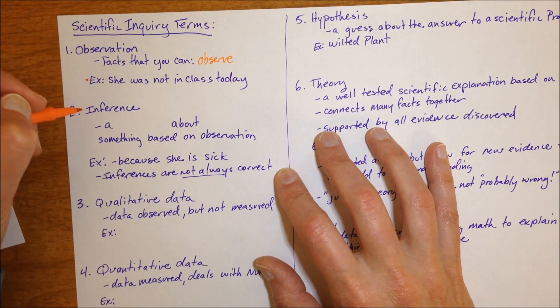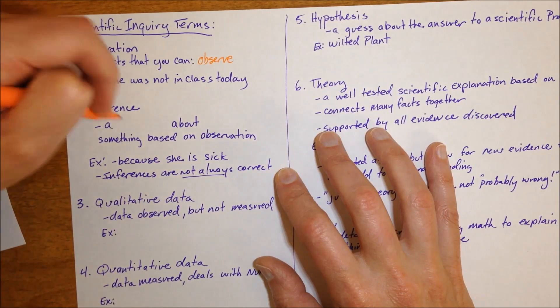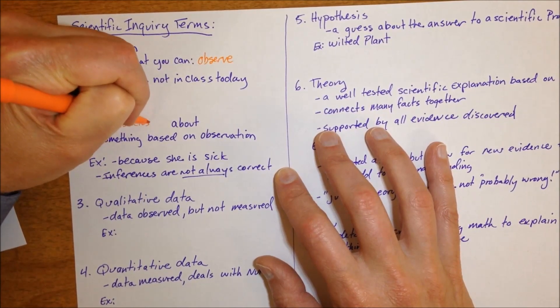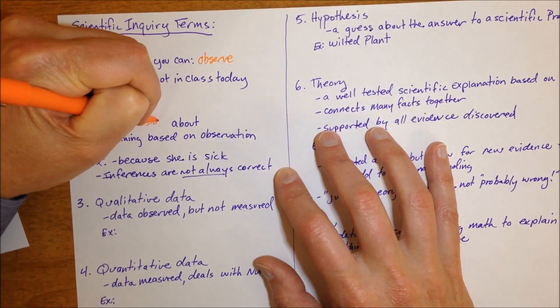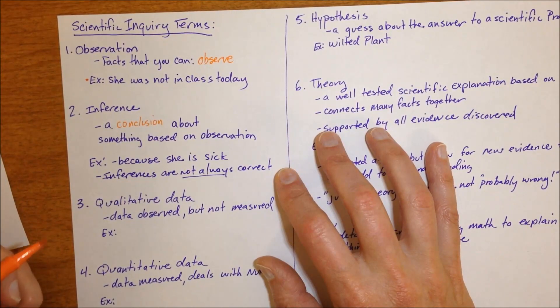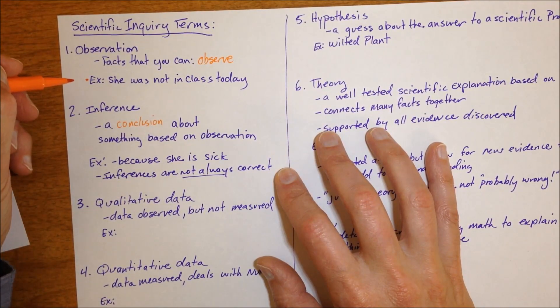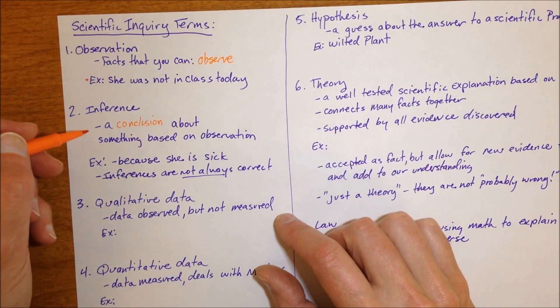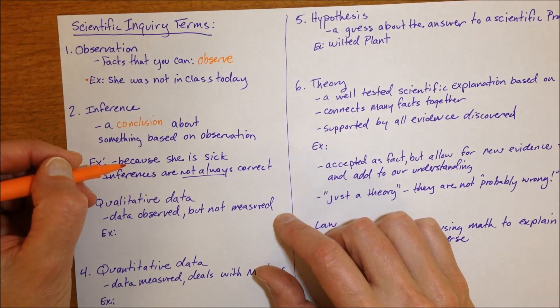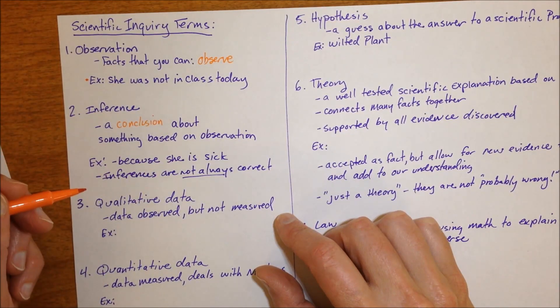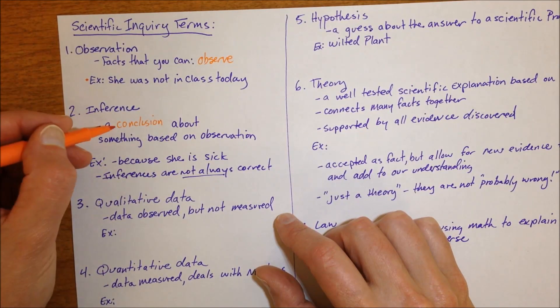the contrasting term is inference, and an inference is a conclusion about something based on an observation. So we can take the first example, she's not in class today and conclude, maybe she's not in class today because she's sick. That's an inference, it's a conclusion.